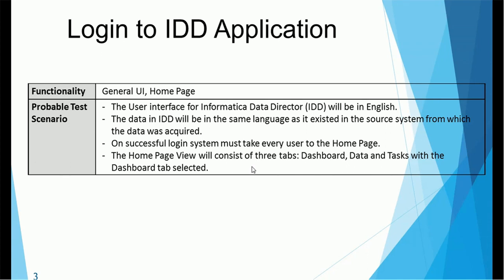The IDD application is by default in English. If internationalization has been implemented, you can choose the corresponding language such as Spanish, German, French, etc. The data in IDD will be in the same language as it existed in the source system, so the labels in the IDD application will change accordingly, but the data within the fields will not change — it will remain as maintained in the database.